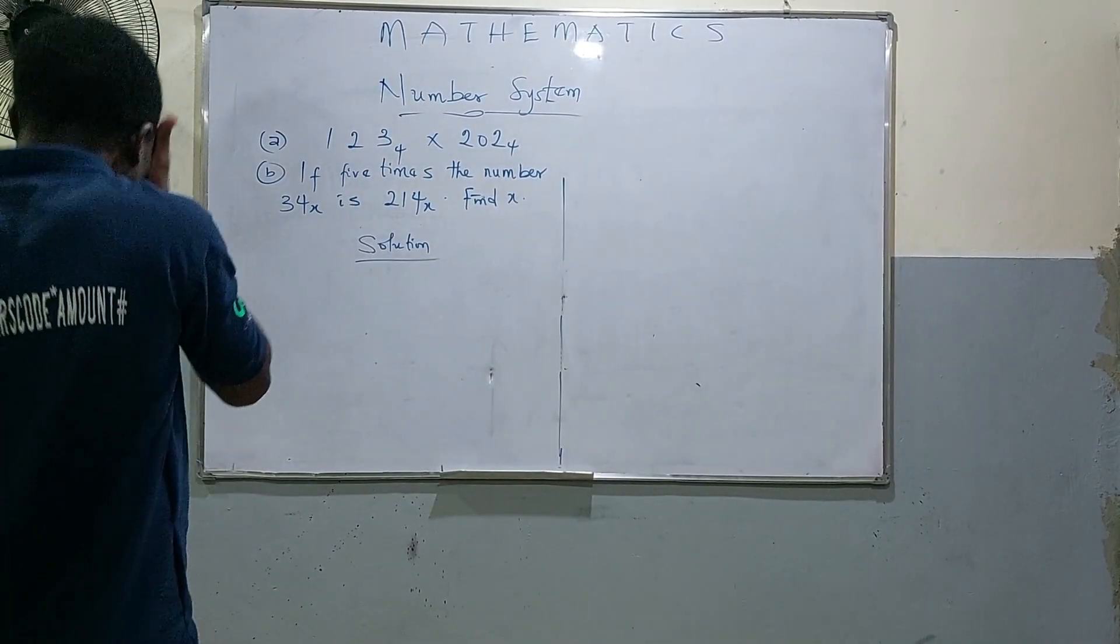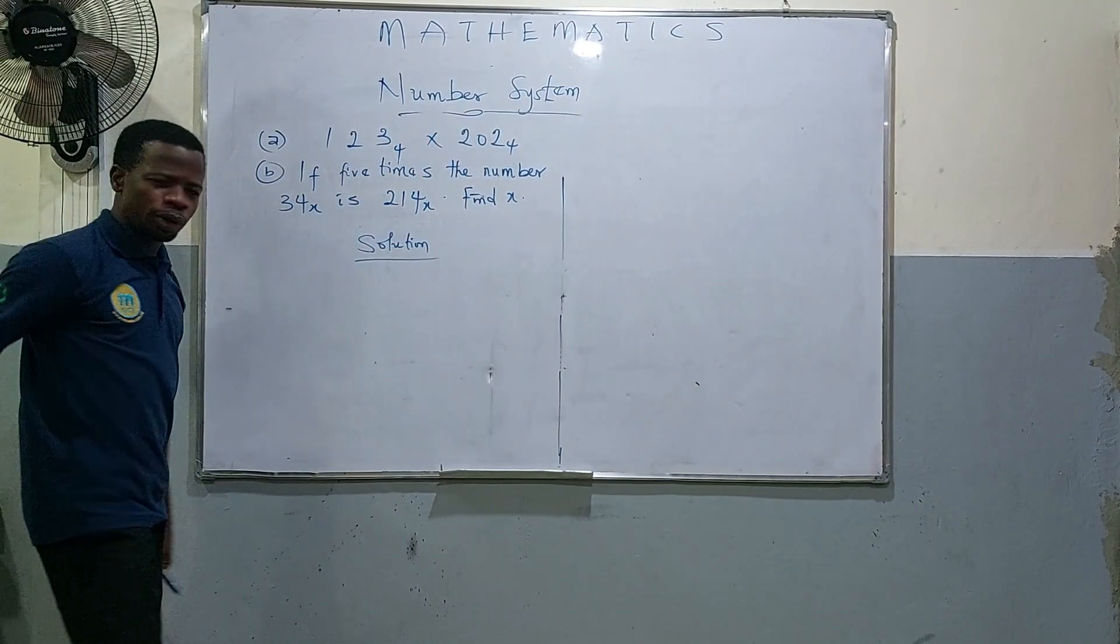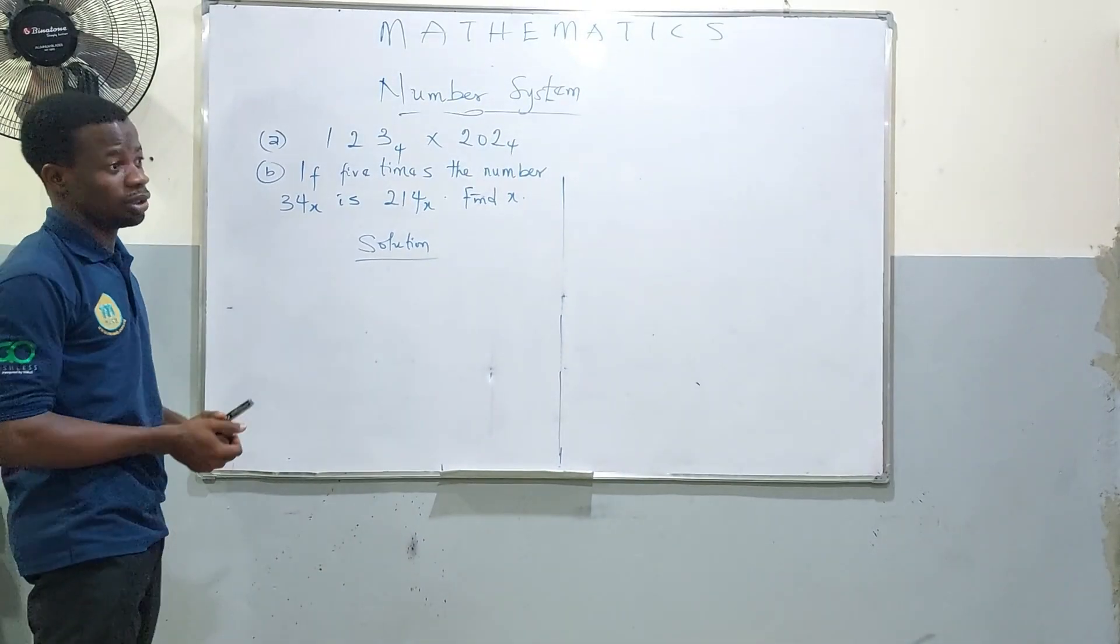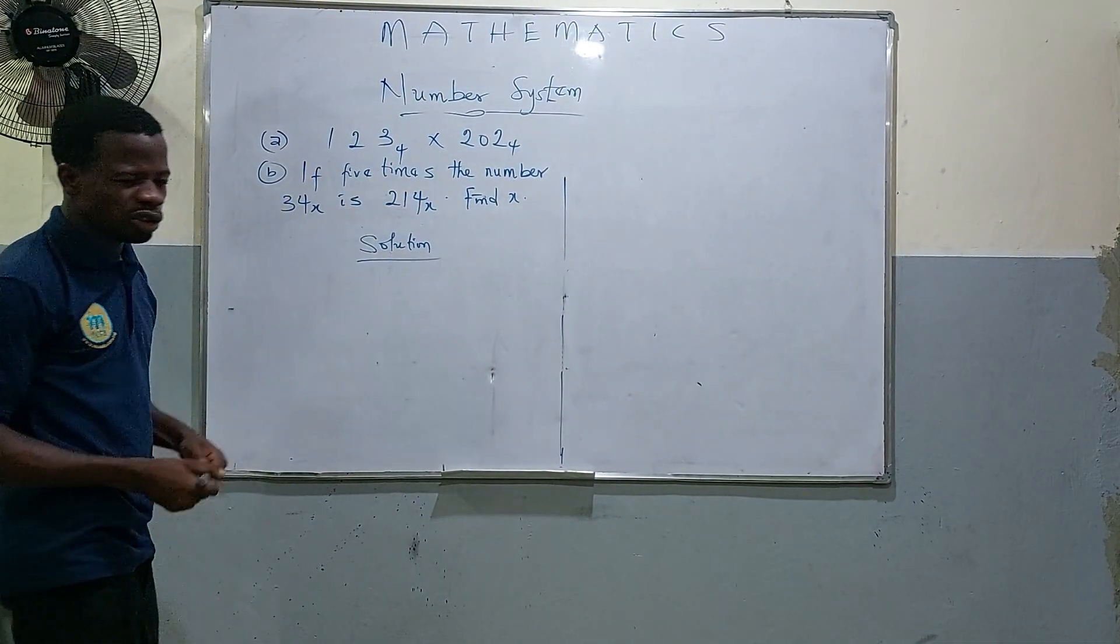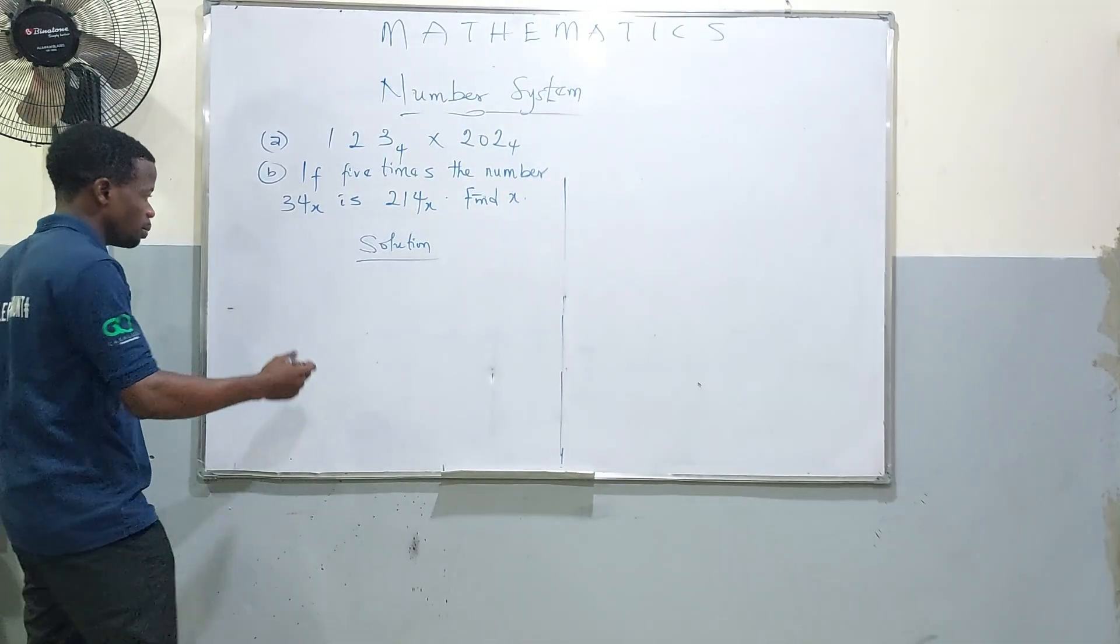Thank you again for coming. Now, let's just pick these random questions from our system. This one, 1, 2, 3 base 4 times 2, 3 base 4. That's the multiplication of numbers in base 4.